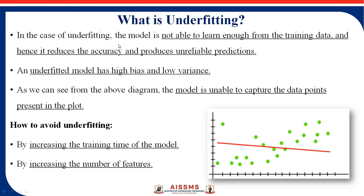In underfitting, the model is not able to learn enough from the training data. There are many data points in this graph and you need to find the best fit line. The straight line is present but it cannot cover multiple data points because all the points are scattered. This is an underfitting model, which has high bias and low variance, and it reduces accuracy and produces unreliable predictions. The model is unable to capture the data points present in the plot.